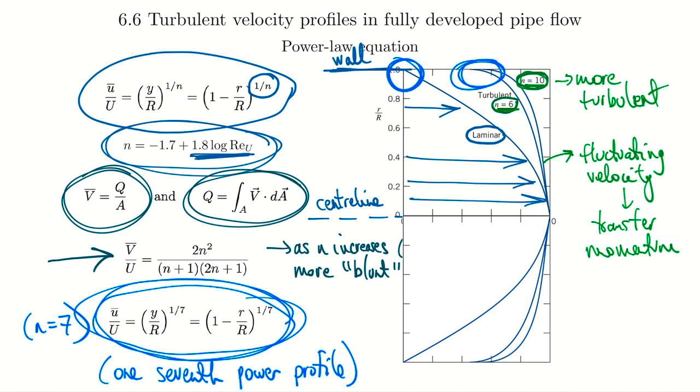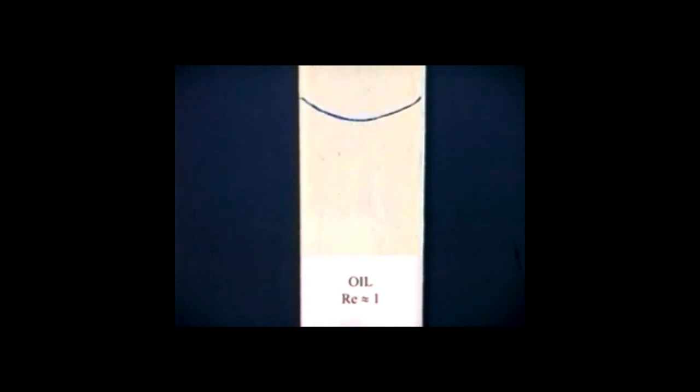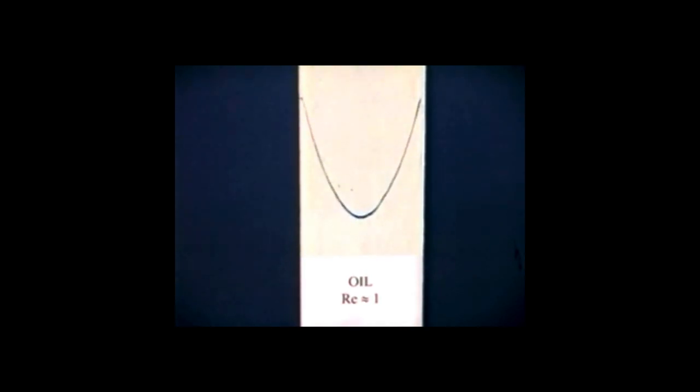Now I'll show some videos so we can see these flows and really see what's going on, since a lot of this has been mathematical. We start with a timeline using ink dropped into a flow to show a low Reynolds number laminar flow profile. As it flows, the centerline is faster and near the edges we have zero velocity — really demonstrating that parabolic profile with no-slip conditions at the wall.